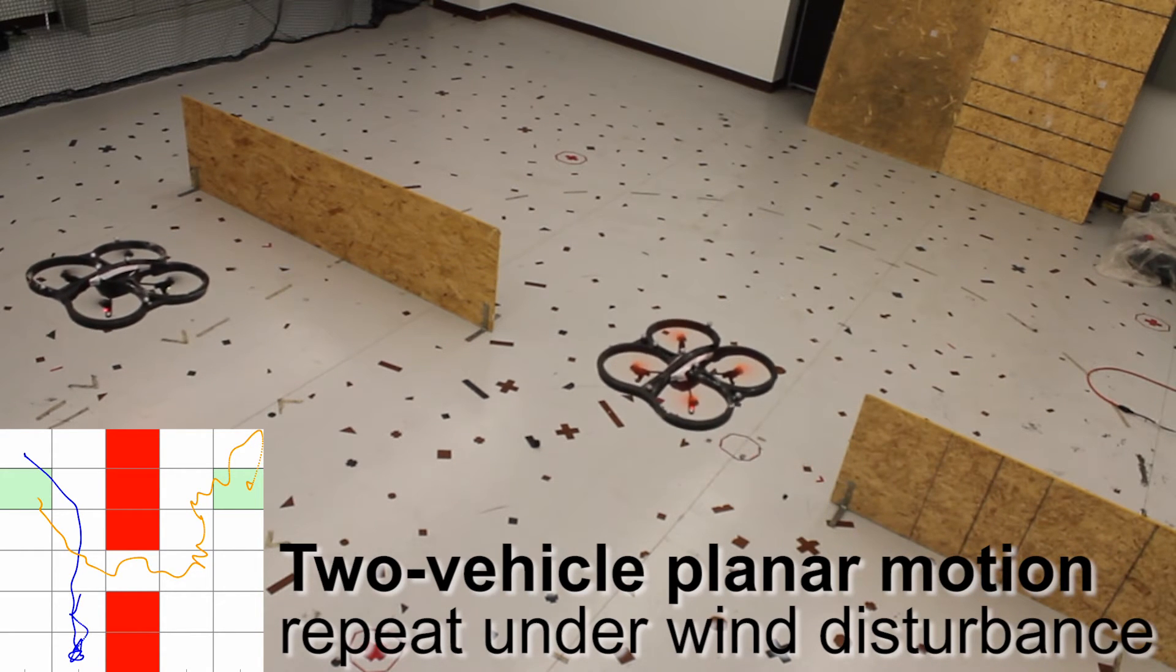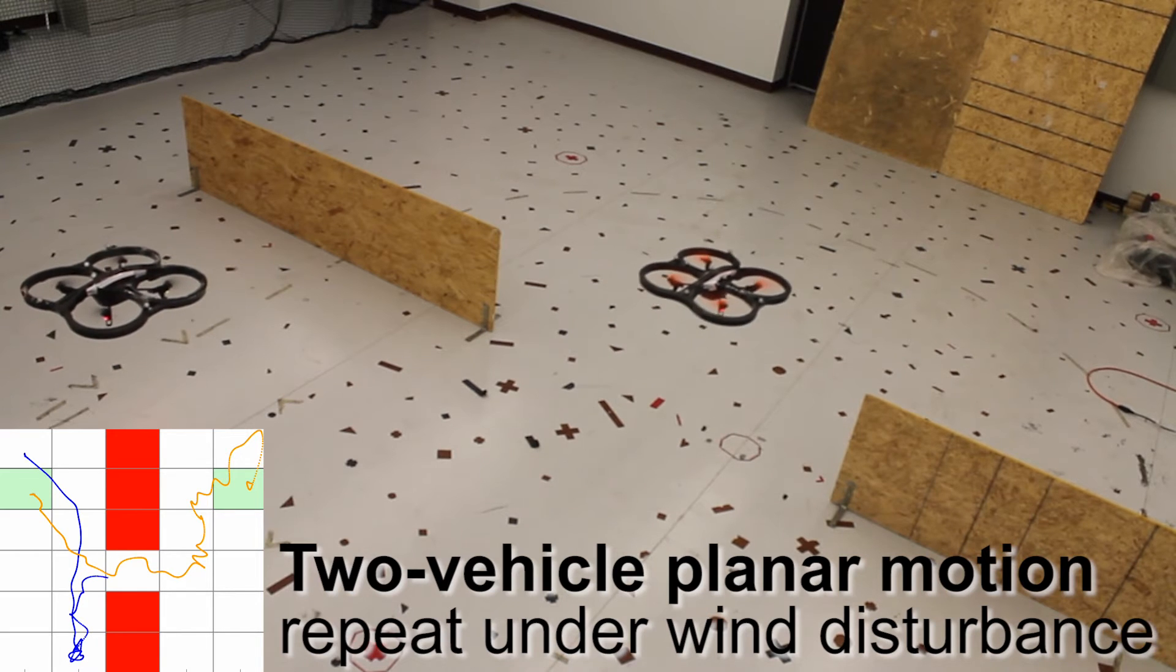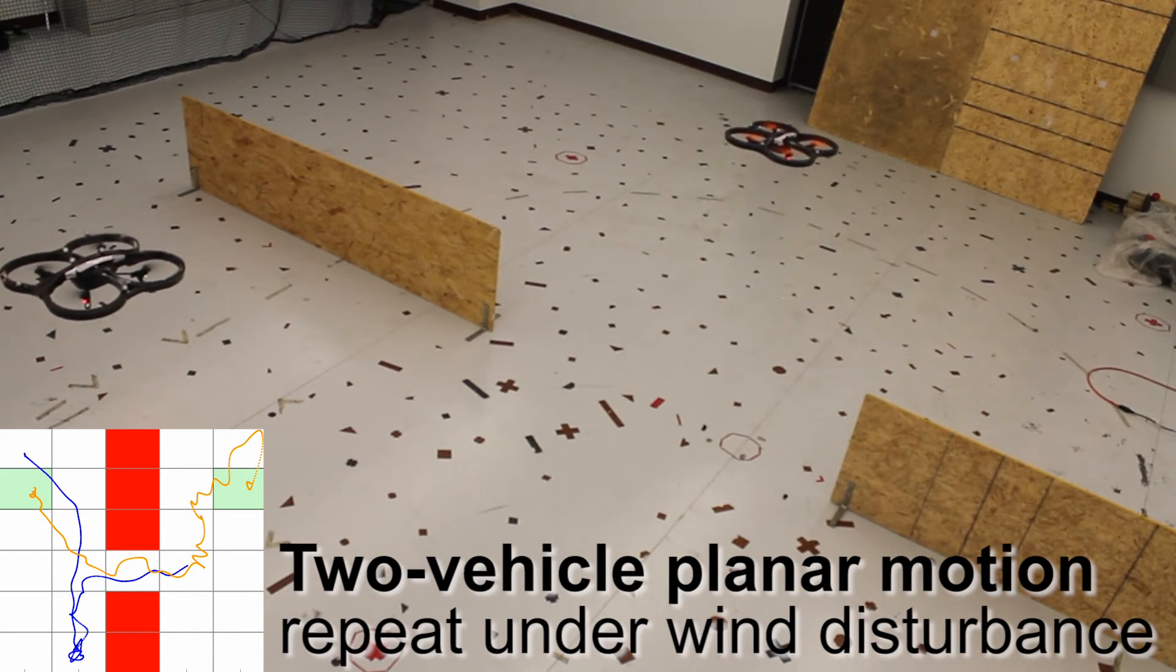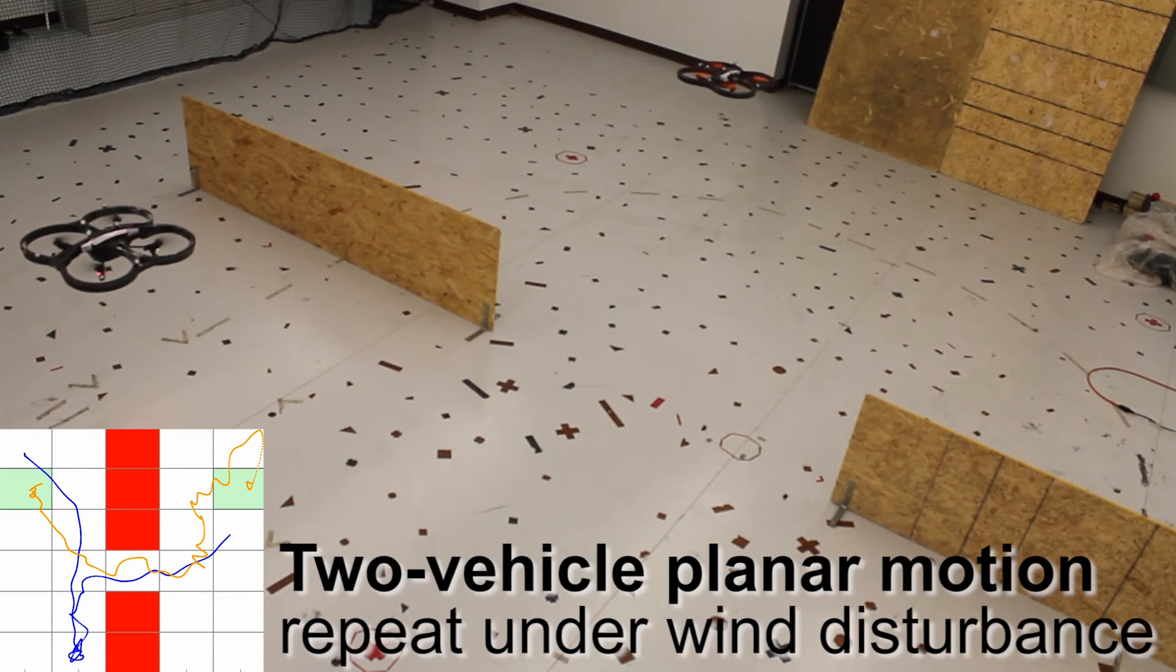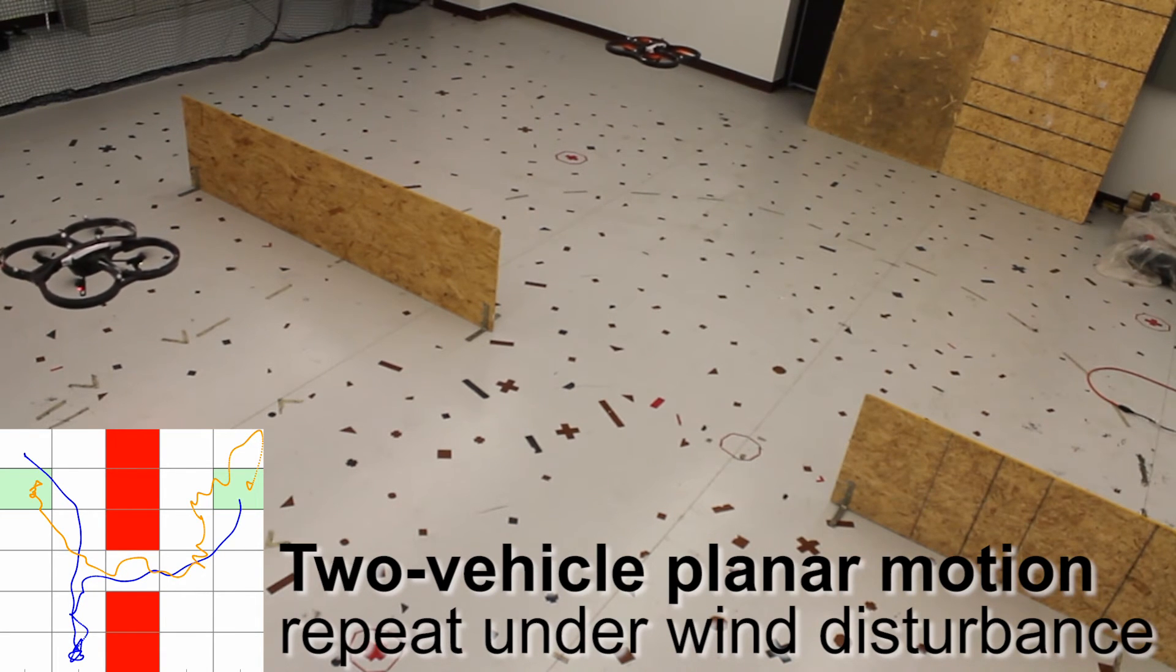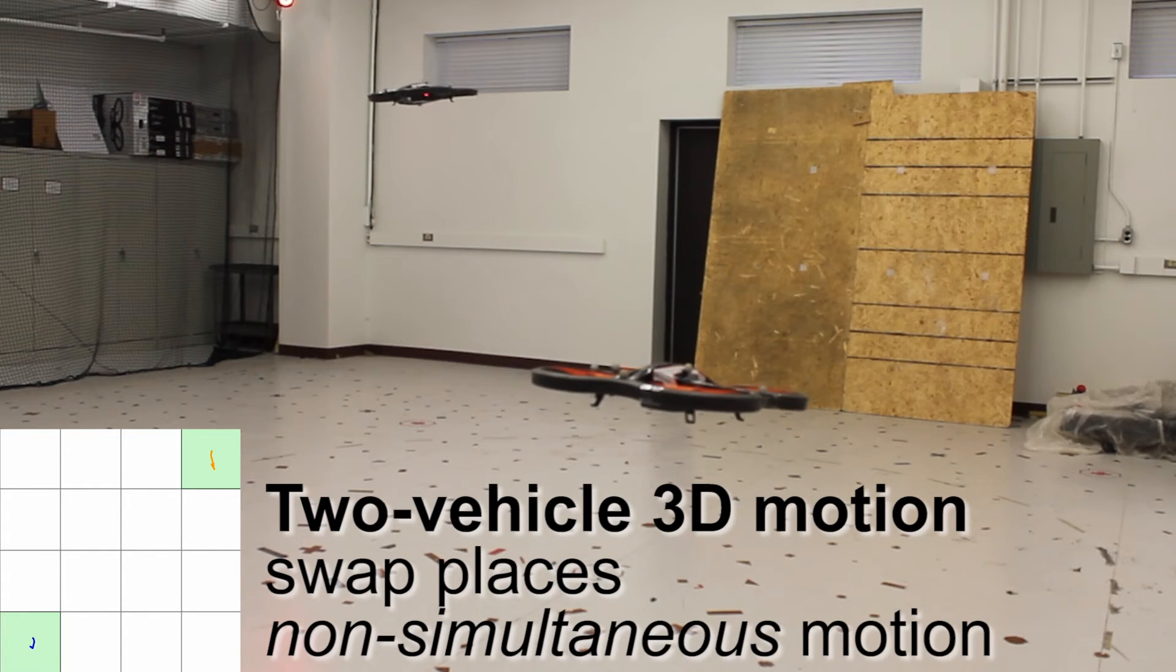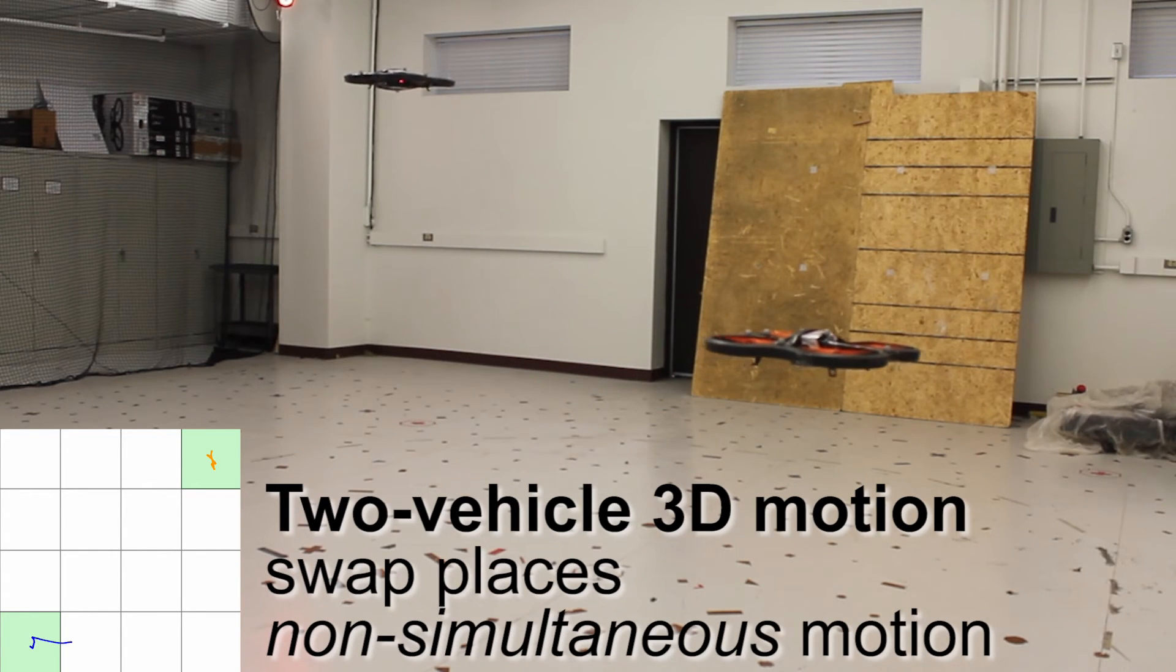Opposite to the previous scenario, now the vehicle on the left makes room by waiting in the lower left corner. These different paths arise from allowing non-determinism in our high level strategy. Now we demonstrate a 3D motion in which the two vehicles must switch places.